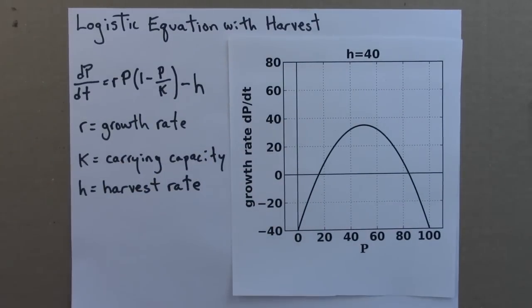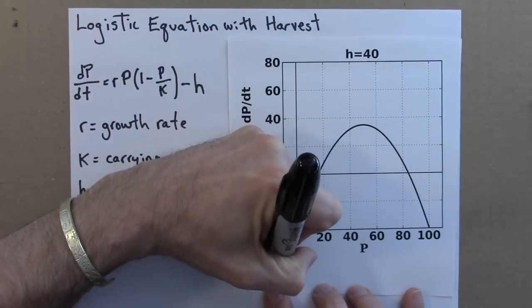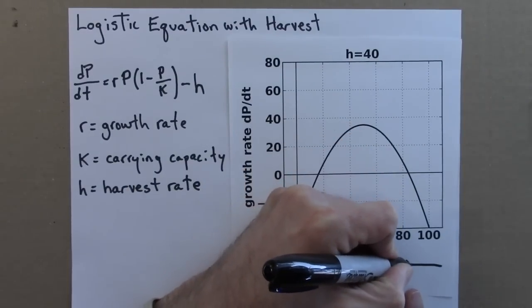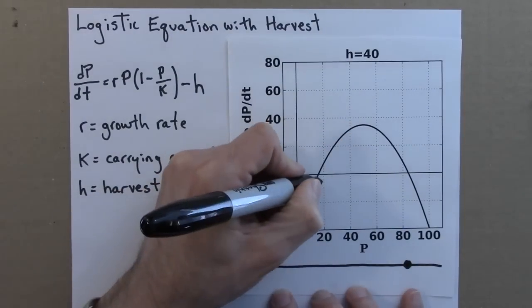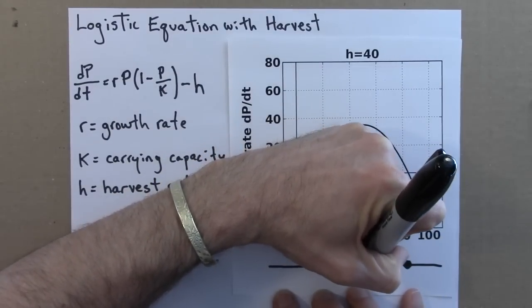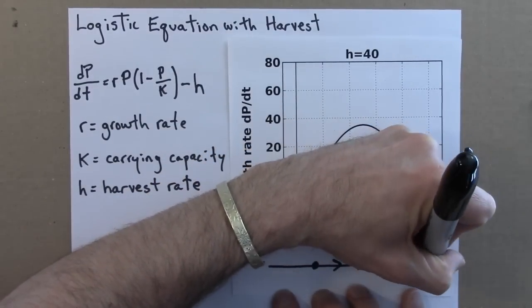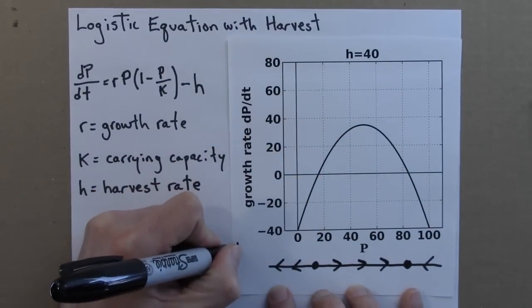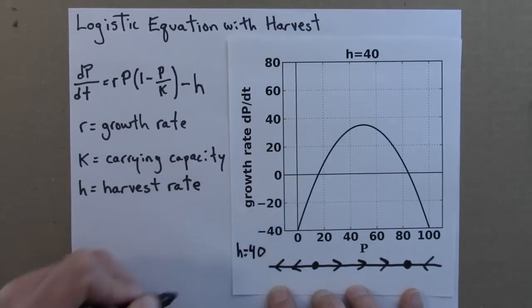So let me draw the phase line for this situation. Here's my line, and I have a fixed point there, fixed point there. In between these two fixed points, the population increases, above it decreases, and so on.